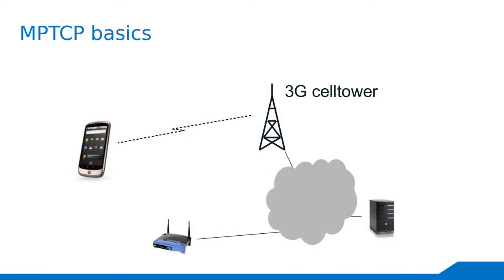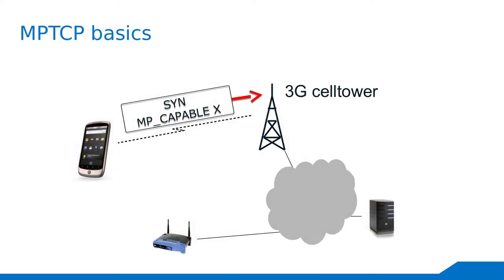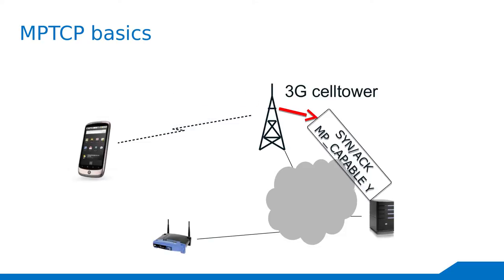Now let's go over a few MPTCP basics. MPTCP is presented to the application as a single socket, and then the implementation creates multiple TCP-like connections — subflows. We start with a SYN with a special option called MP-capable, and this is how you open the first connection. The server replies with MP-capable as well, indicating it speaks MPTCP.